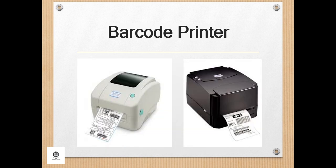A barcode printer is a computer peripheral for printing barcode labels or tags that can be attached to or printed directly on physical objects. Barcode printers are commonly used to label cartons before shipment or to label retail items with UPCs or EANs.